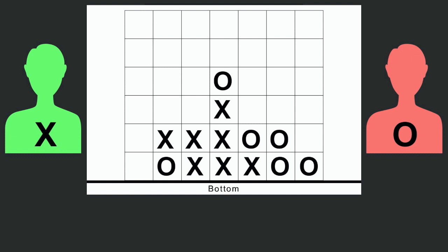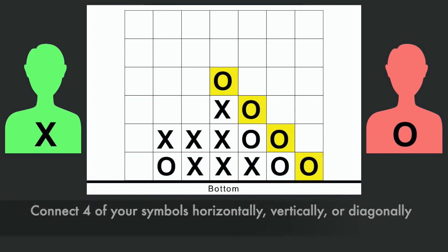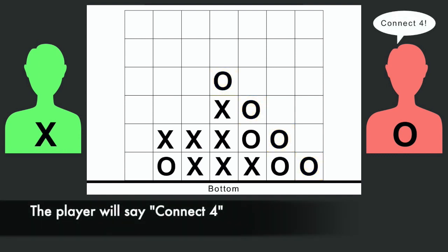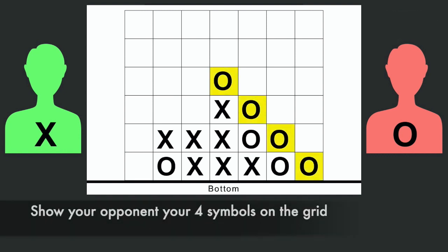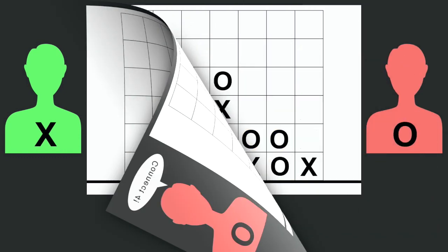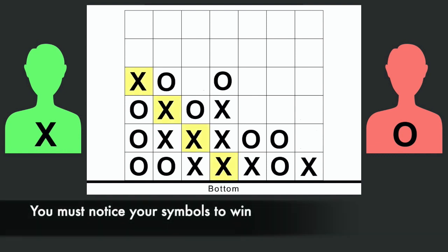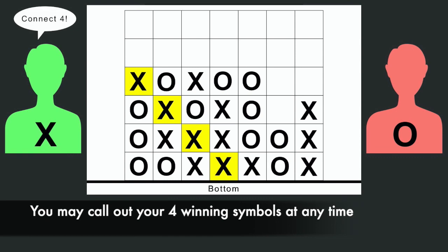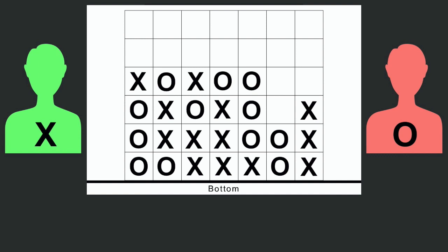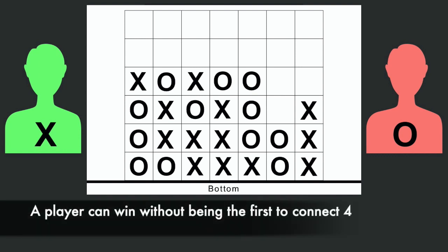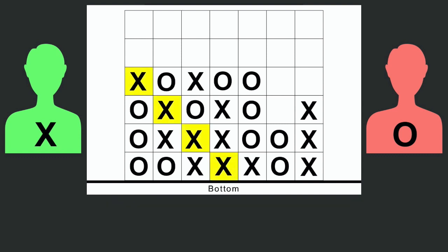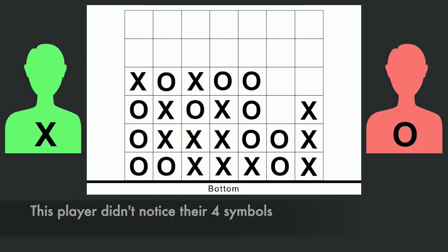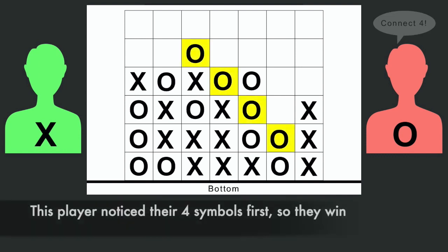As the game moves on, players keep track of their symbols on the grid. The first player to get four of their symbols in a row — horizontally, vertically, or diagonally — and notice it, will call out Connect Four, then show their opponent where the four symbols are on the grid. The player must notice that they have connected four of their symbols. If a player misses it, they may call out Connect Four at any time when they do notice, even if it isn't their turn. This means the other player could still win even if they were not the first to connect four symbols.